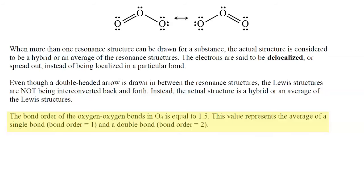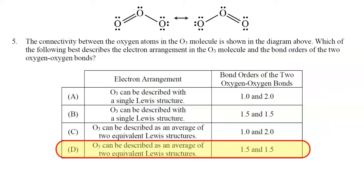Now we have enough information for the correct answer to question 5. The correct answer is choice D. In terms of the electron arrangement, ozone can be described as an average of two equivalent Lewis structures, and the bond orders of the two oxygen-oxygen bonds are each 1.5.